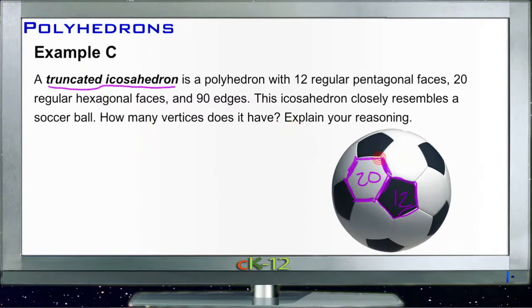And 90 edges, so 90 intersections between the different shapes. The icosahedron closely resembles a soccer ball—that's why I have a picture of a soccer ball here. How many vertices does it have? We need to explain our reasoning.